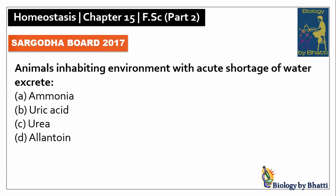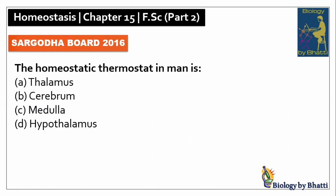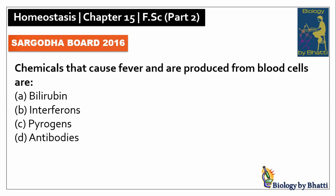DG Khan Board 2017: animals inhabiting environments with acute shortage of water excrete uric acid, the answer was B option. DG Khan Board 2016: the homeostatic thermostat in man is the hypothalamus, D option. In the same paper, chemicals that cause fever and are produced from blood cells are pyrogens, so the answer was C option.